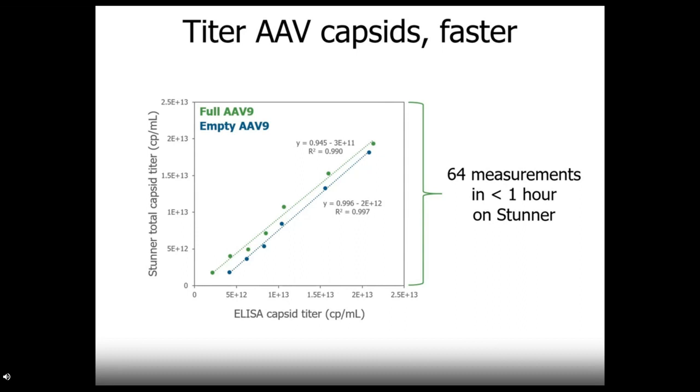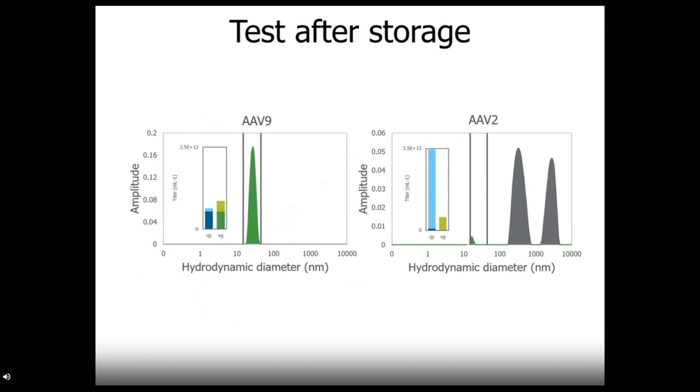Now for getting capsid titer, Stunner is way faster and requires less upfront work than ELISA. Here we've taken full or empty AAV9 and run a dilution series where we've compared Stunner's total capsid titer metric against the result for a capsid ELISA. The results have slopes close to 1 and R squared values above 0.99. And importantly, it would take hours to get this ELISA data, while Stunner has done it in less than an hour with no sample prep.